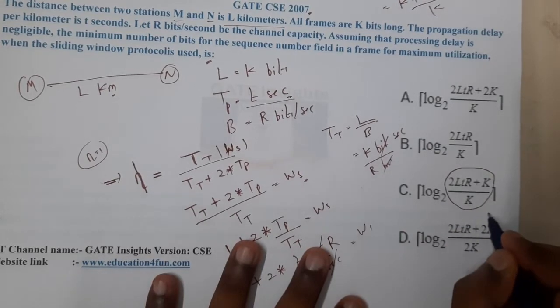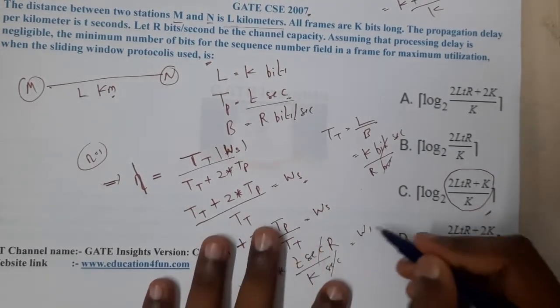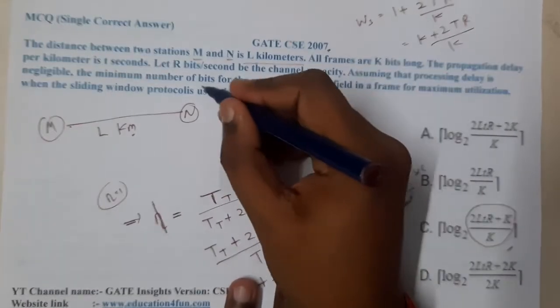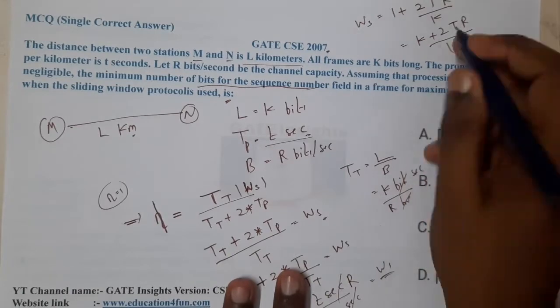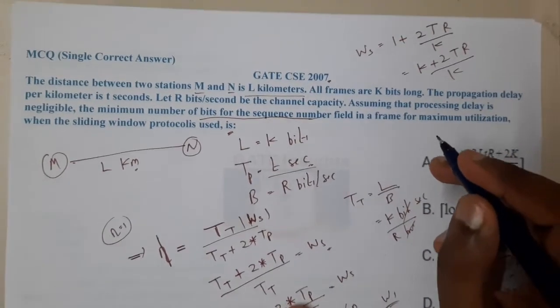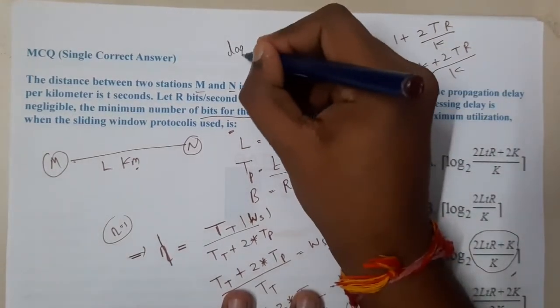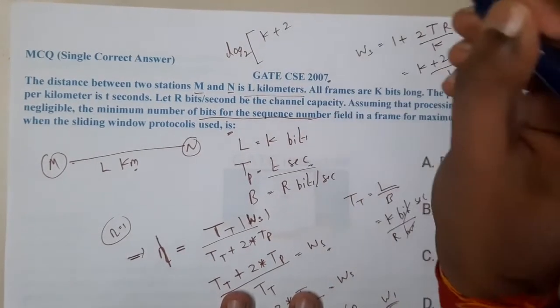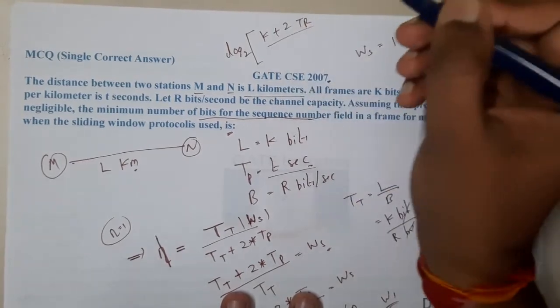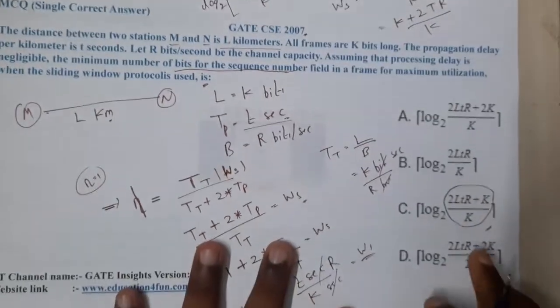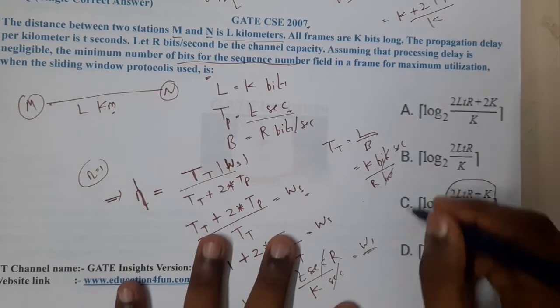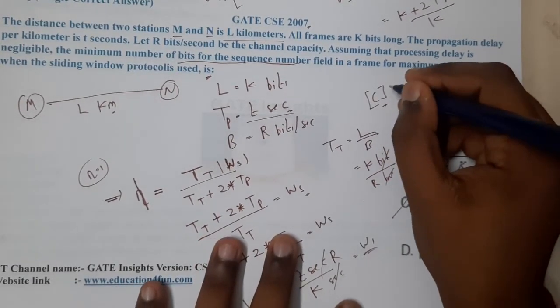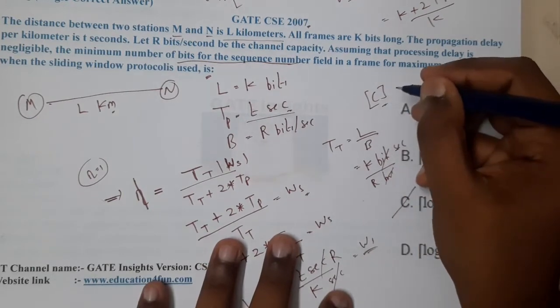If you recall, they asked the minimum bits for the sequence. Now we got the window size. If you want to get the exact bits, we will apply log base 2: log base 2 of K plus 2TR by K. That is what option C says. With that understanding we can conclude that C is the correct answer.